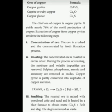The chief ore of copper is copper pyrite — it yields nearly 76% of the world production of copper. The extraction of copper from copper pyrite involves the following steps. The first step is concentration of the ore, where we remove impurities. The ore is crushed into fine powder and concentrated by the froth flotation process.